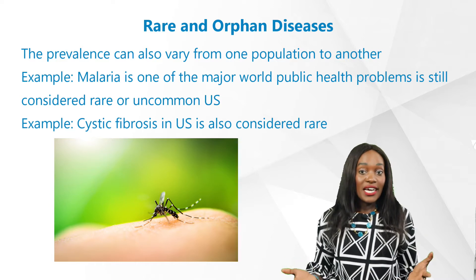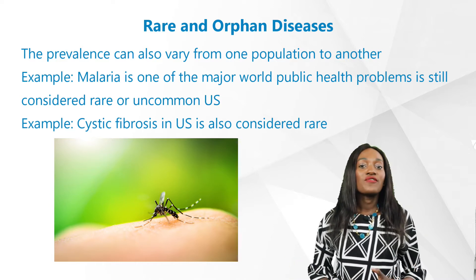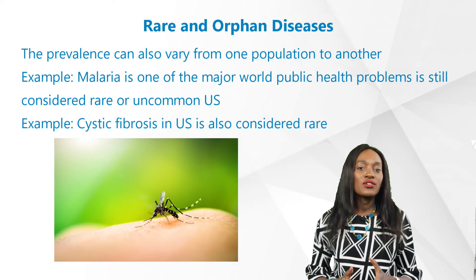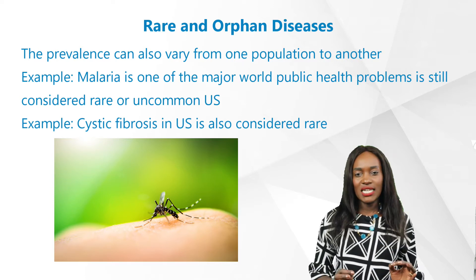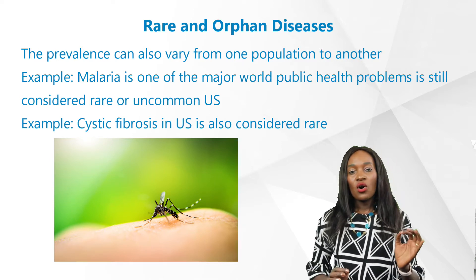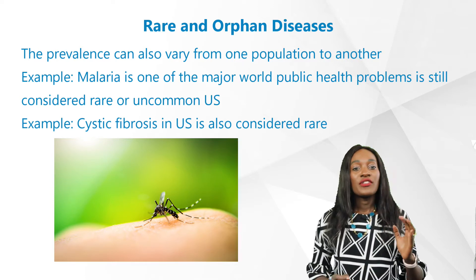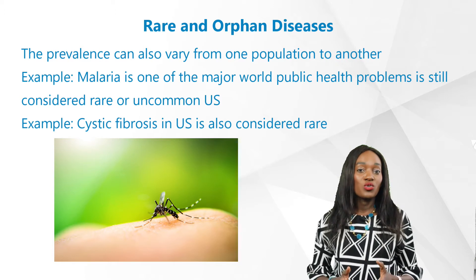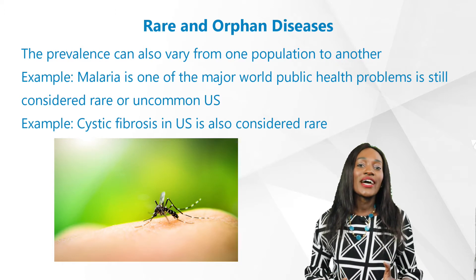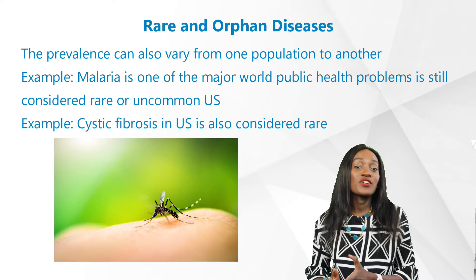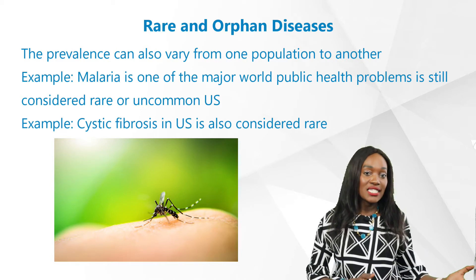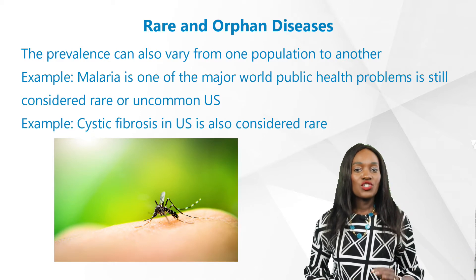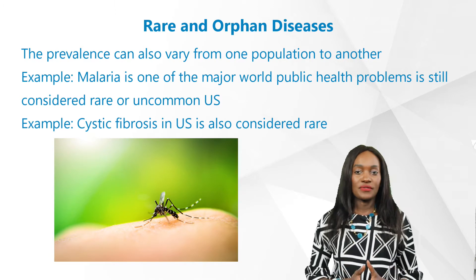For example, malaria — which is one of the world's major public health problems that actually causes death in children every two minutes — also causes 350 to 500 million infections worldwide, yet is still considered rare or uncommon, for example in the United States, where approximately 1,200 cases are diagnosed each year.